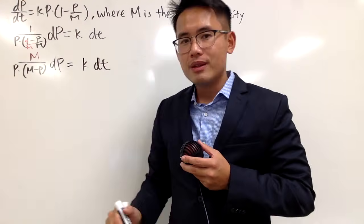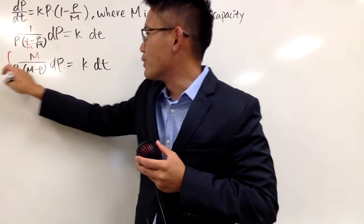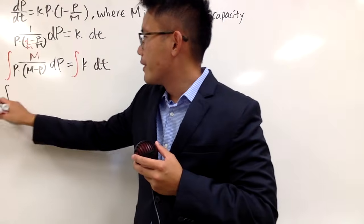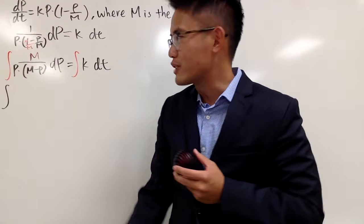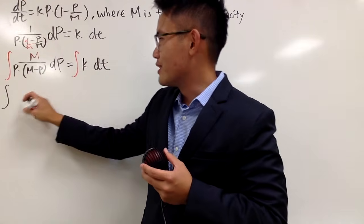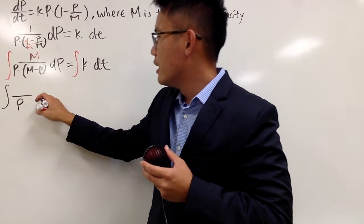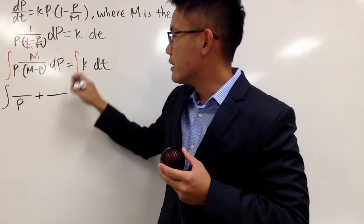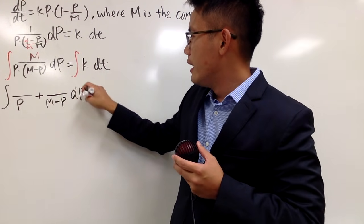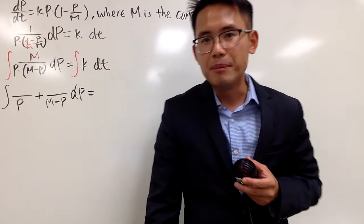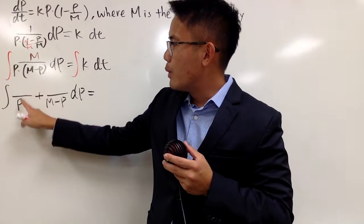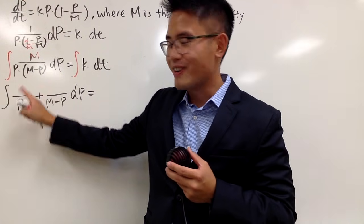Before we integrate, we have to do partial fraction — let me put the integral sign on both sides first. In order to integrate that, I will do partial fraction. This is factored already, but I will break this apart as some number over p, adding with some other constant over M minus p. I will do this the quick and dirty way, namely the cover-up method.